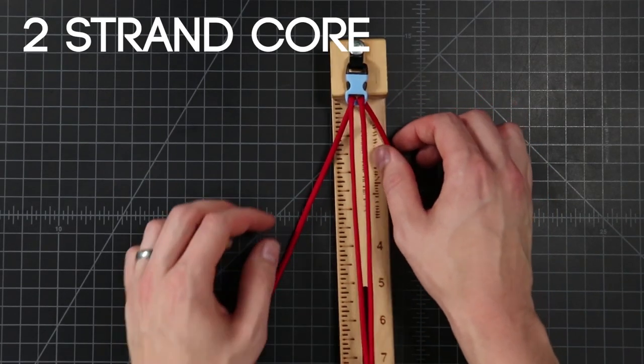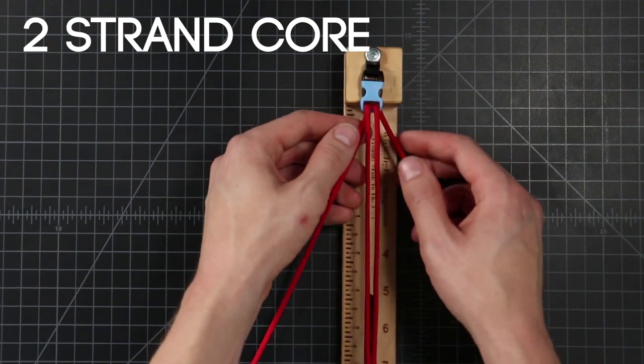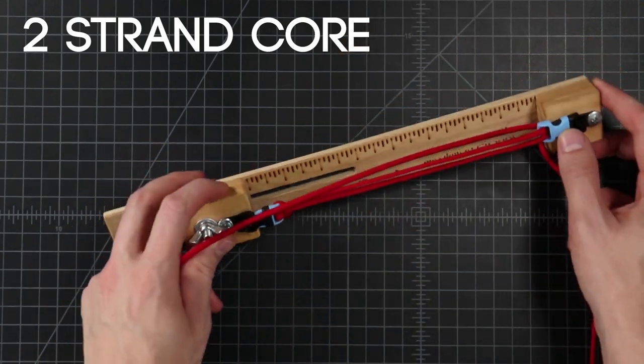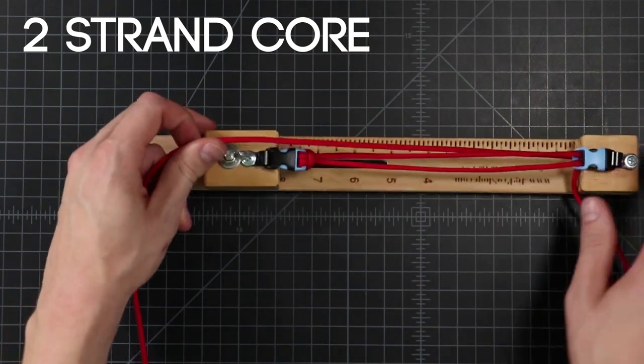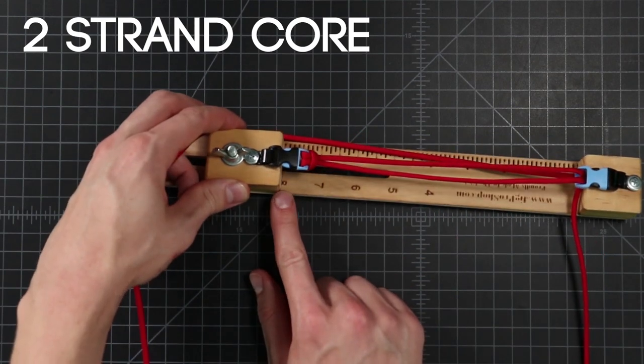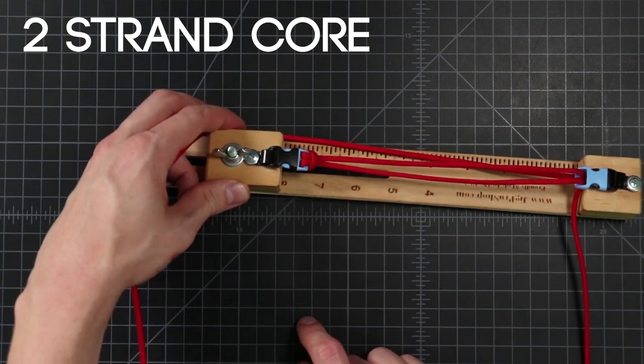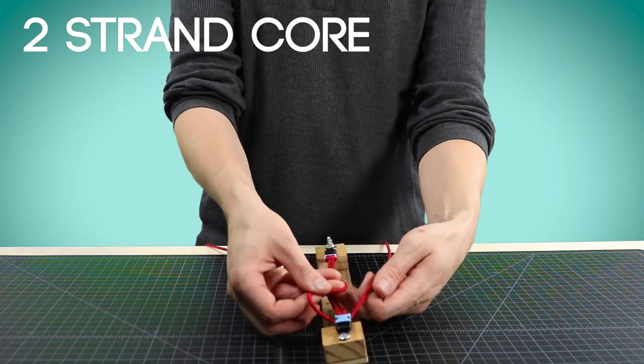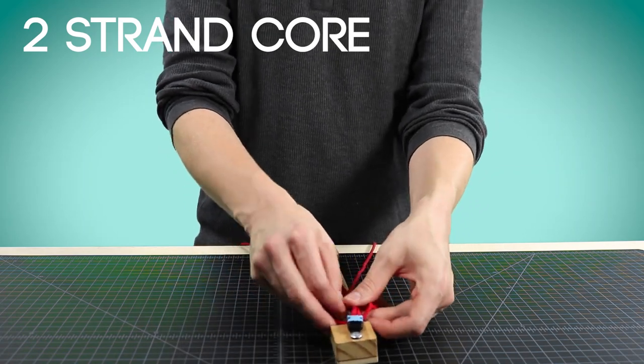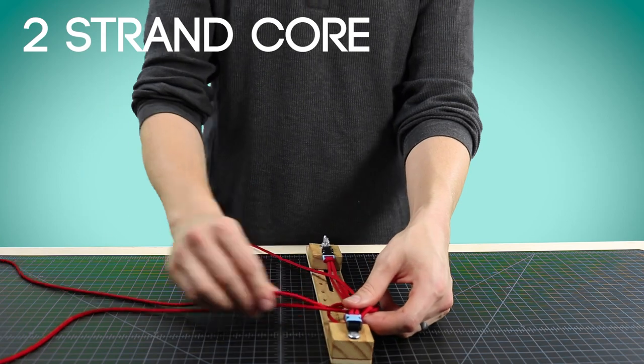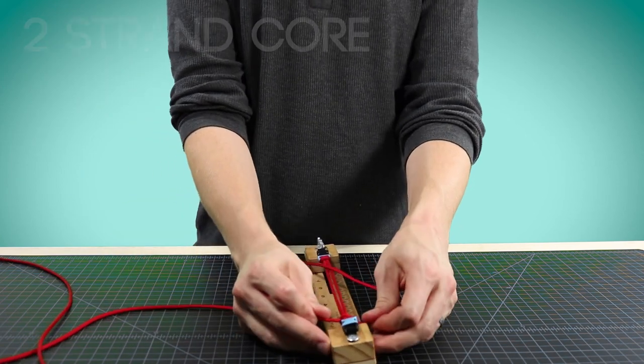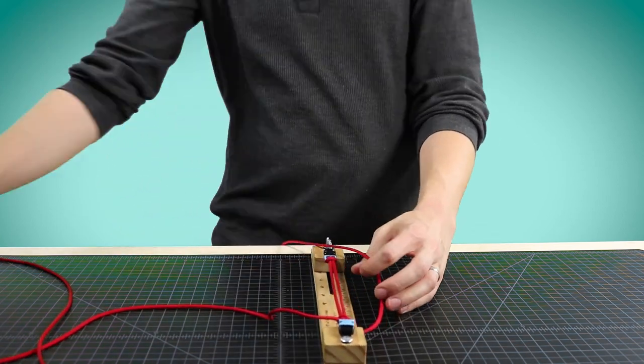Once you've threaded the cord through the top buckle you want to check to make sure your bracelet is the right size. I'm on a jig so I've measured it out to 8 inches and that's one inch longer than my wrist measurement of 7 inches. If you're not using a jig you'll probably want to do your first knot just to hold the cord in place and then double check your measurements with a ruler.